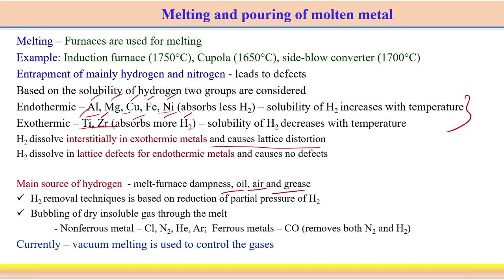How to remove the hydrogen? In principle, the removal of hydrogen is possible if we try to reduce the partial pressure of the hydrogen. The partial pressure of hydrogen can be reduced in principle, and then we can reduce the problem associated with hydrogen dissolved in the casting process. What we can do is simply bubble dry insoluble gases through the melt. We can pass insoluble gases through the melt and they will try to capture and dissolve the hydrogen in the presence of insoluble bubble gases. This way, hydrogen can be removed — this is one way to reduce the partial pressure of hydrogen and remove it.